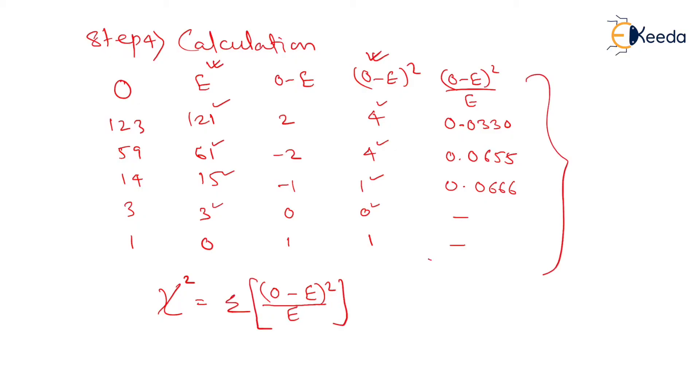So I am going to add all these values. After adding I will get the value, so that is the answer of Poisson distribution.